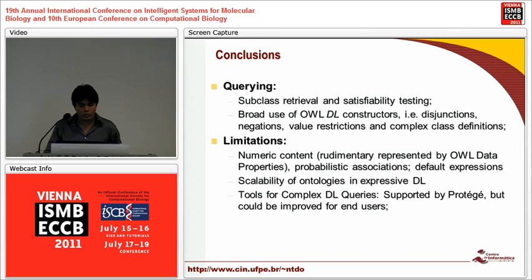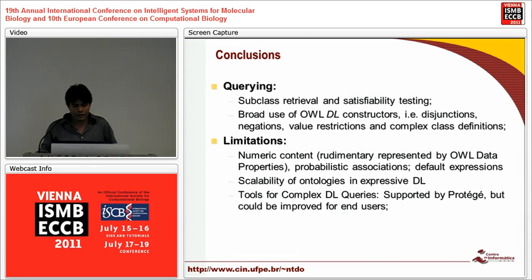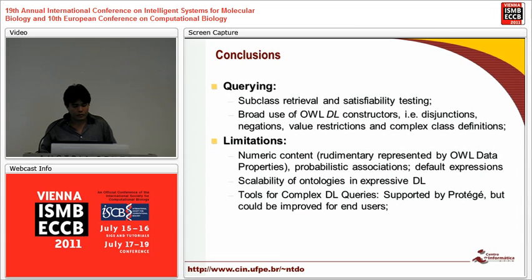We also performed subclass retrieval and satisfiability tests, and broadly used OWL DL constructors like disjunctions, negations, value restrictions, and complex class definitions. Known limitations include: numeric content is rudimentarily represented via datatype properties; probabilistic associations and default expressions are not supported; scalability is a concern with expressive DL description logics; and tools for complex DL queries, even when supported by Protégé, could be improved with a more end-user-friendly interface.